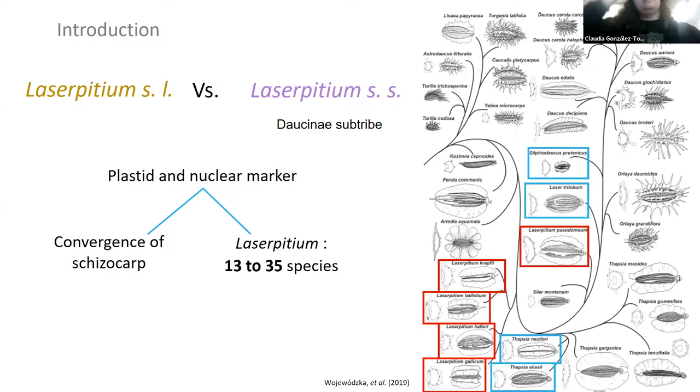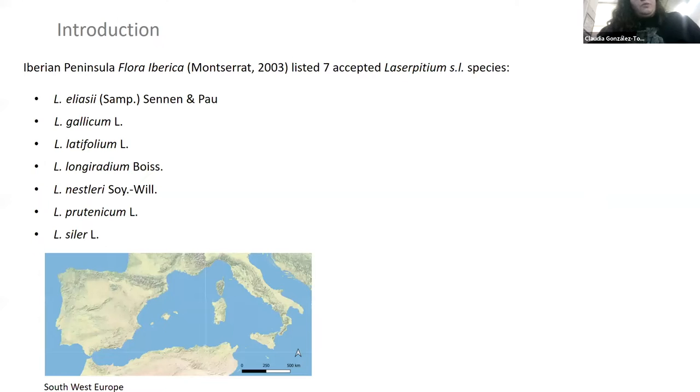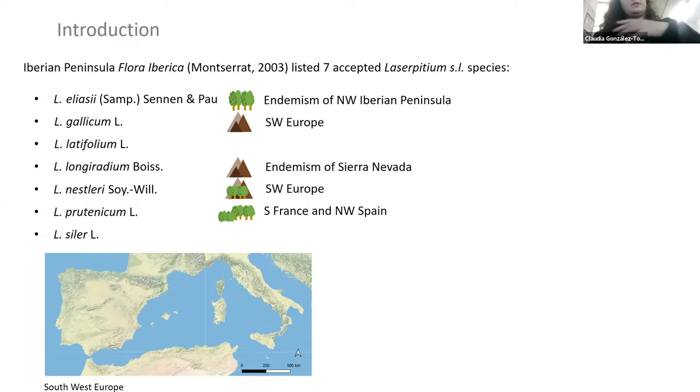This situation of convergence has affected the Mediterranean endemics of the mountains because they have been well studied but mainly focused on the fruit morphology. The Iberian Peninsula is in the western edge of the Mediterranean. Using a Laserpitium sensu lato concept, we find seven species, two of which, Laserpitium elaeosalinum and Laserpitium longiradium, are Iberian endemics.